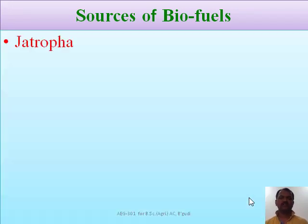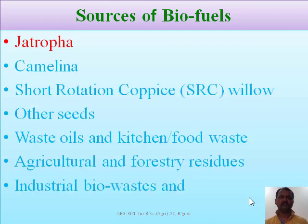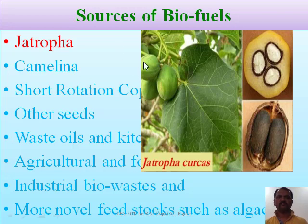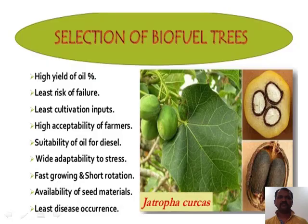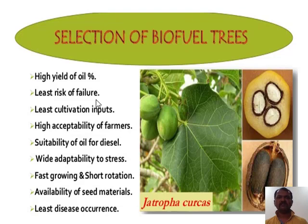Here are the sources of biofuels. First is Jatropha. This is a plant source from which we are getting the biofuels, or from this we are making the biodiesel. Jatropha seeds are extracted from the Jatropha plant and will be used for making biofuels. It will be selected based on the high yield of oil percentage, least risk of failure when extracting the oil from the plants, and least cultivation inputs, so the cost of cultivation should be less. Acceptability of the particular plant by the farmers should be high.